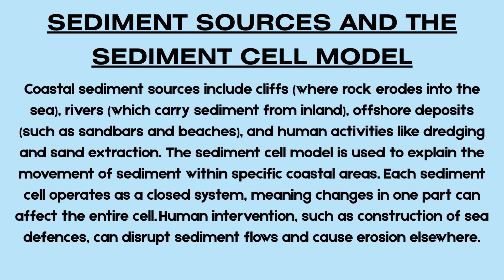Sediment Sources and the Sediment Cell Model. Sediment that shapes the coastline comes from various sources. Terrestrial sources include river discharge delivering fine sediment, weathering and mass movement of cliff material, and wind-blown sediment from inland areas. Marine sources involve material transported into the area by waves and currents. Human sources include beach nourishment projects and coastal engineering that introduce new material into the system. The Sediment Cell Model divides the coastline into self-contained units where inputs, transfers and outputs of sediment occur. Each sediment cell is a closed system, meaning that sediment is largely recycled within it rather than transferred between cells.